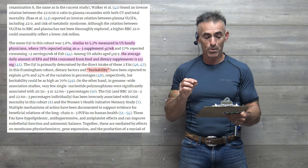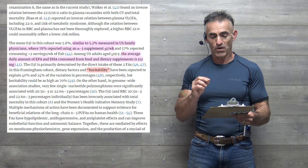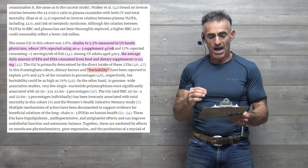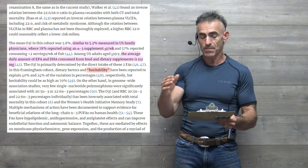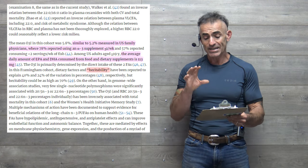the omega-3 index is primarily determined by the direct intake of two fatty acids. In this Framingham cohort, the dietary factors and heritability, which is discussed, have been important to explain 40 percent and 24 percent of the variation in percentages, respectively. But heritability can be as high as 70 percent.